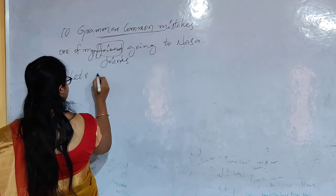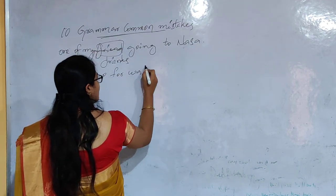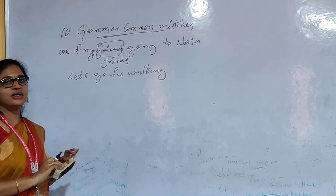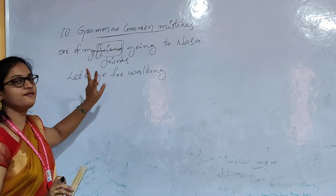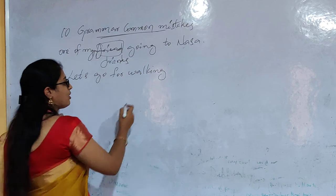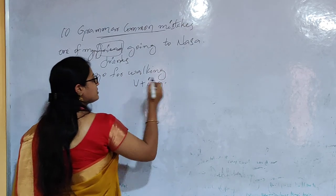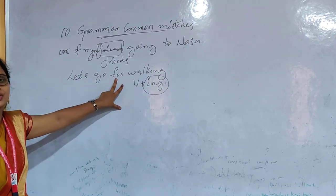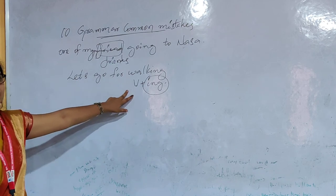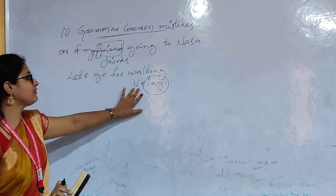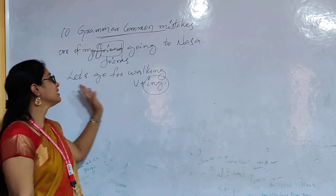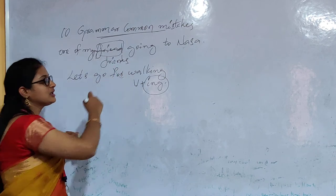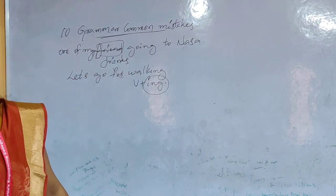Sixth mistake: 'Let's go for walking.' This is wrong because whenever you use the preposition 'for', you should not add the '-ing' format after it. Always use the base verb. So avoid adding '-ing' whenever you use the preposition 'for'. The correct sentence is: 'Let's go for a walk' — the verb alone is enough. Do not add '-ing' format when using the preposition 'for.'